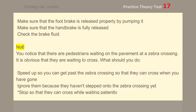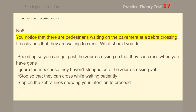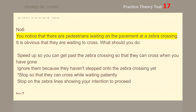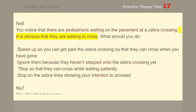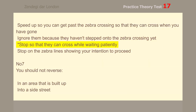Number 6. You notice that there are pedestrians waiting on the pavement at a zebra crossing and it is obvious that they are waiting to cross. What should you do? Stop so that they can cross while waiting patiently.